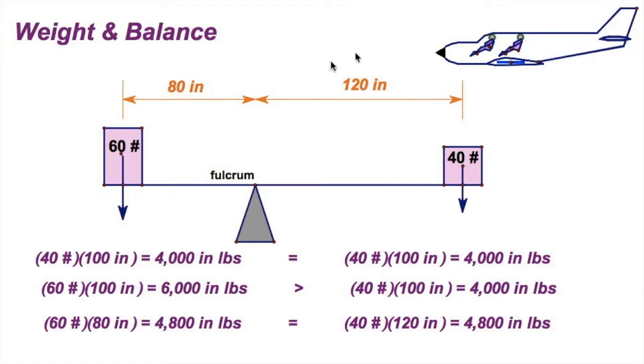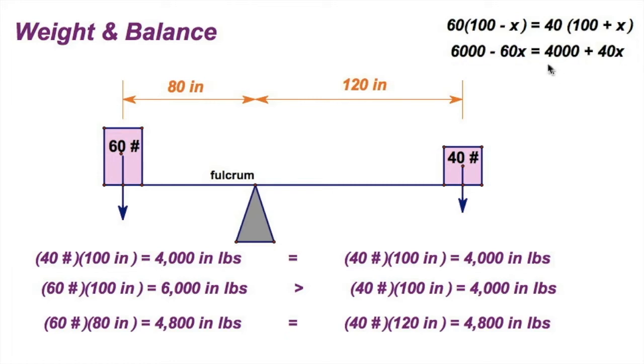I know some of you are thinking, how did you come up with the 120 and the 80? If you want to see the algebra, and honestly this is more for a high school algebra class, but if I set it up like that, I know it's going to be 60 times 100 minus some amount equal to 40 times 100 plus that same amount. If we just crank through the algebra, you would work all this out and you would find that x is, of course, 20. So that's how I knew it was going to be 120 for this arm, and 100 minus 20, or 80 for this arm.